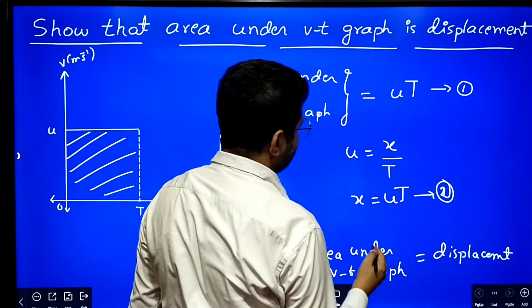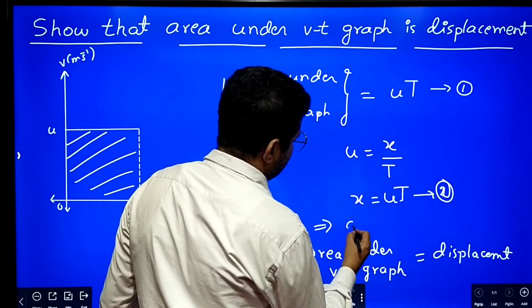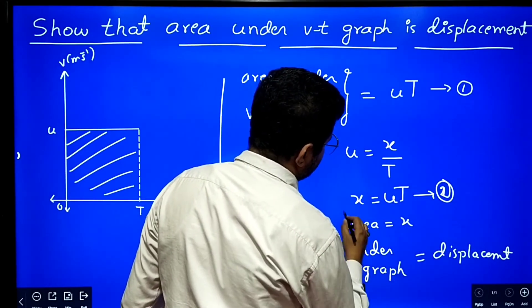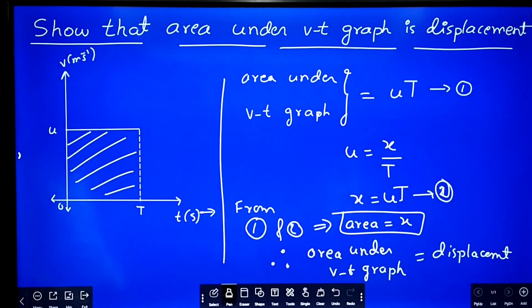Why we have written like this? From equations 1 and 2, what we can write? Area is equal to displacement, correct? Hope you understood this. Thank you very much.